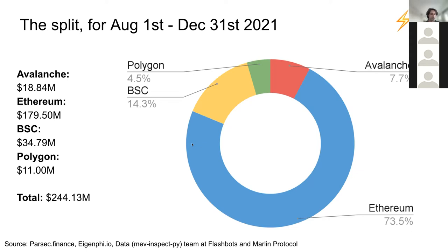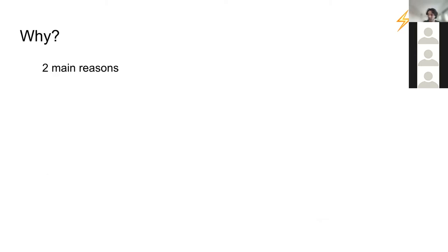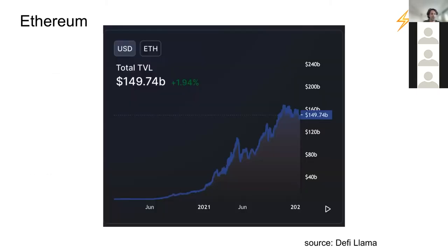Although MEV has traditionally been thought of as a concept very substantial on Ethereum, this clearly shows that MEV extraction is happening in other places as well. There are two main reasons I want to talk about. The first one is the growth of decentralized finance. I'm going to use TVL — total value locked — as a proxy for growth. I know it's a flawed metric and there are other things we could look at like exchange volumes, but it is a convenient and representative one.